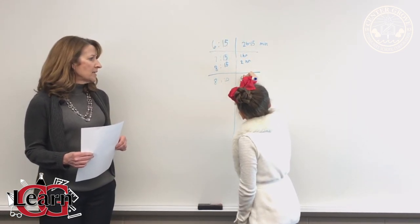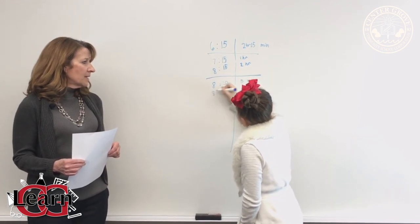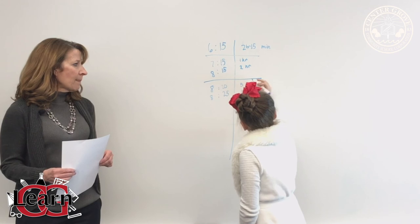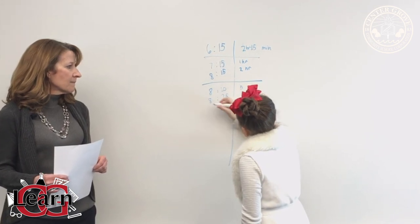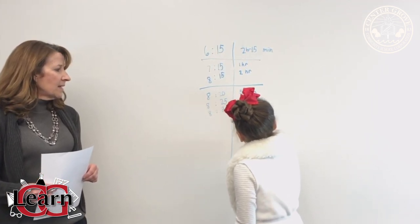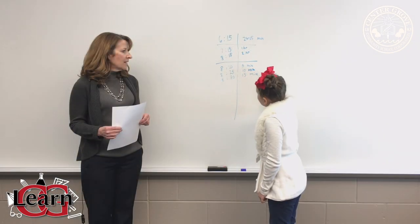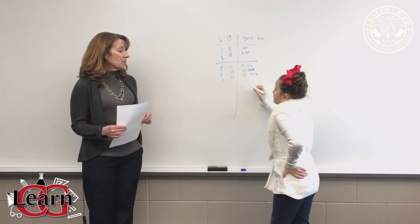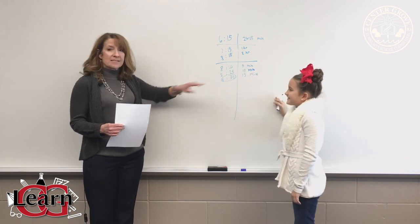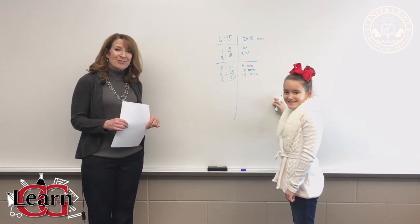8:20 is 5 minutes, 8:25 and 8:30. And that's where she ends. Her answer is 8:30 as the ending time. And that's how we find elapsed time in third grade.